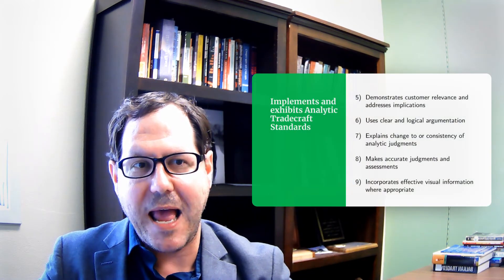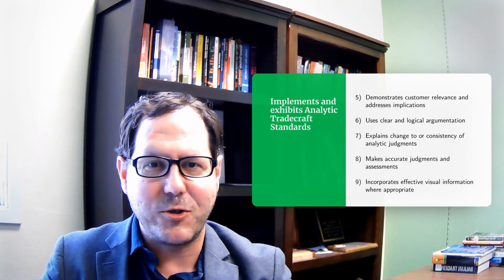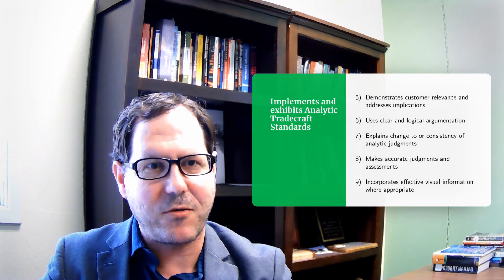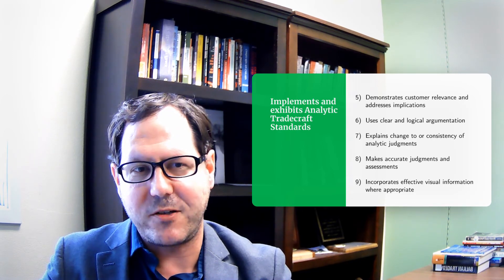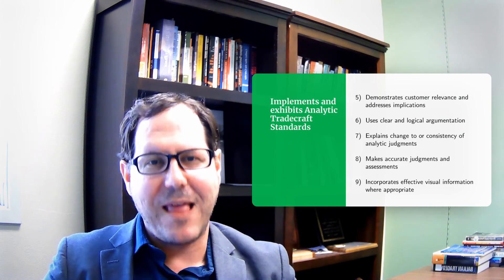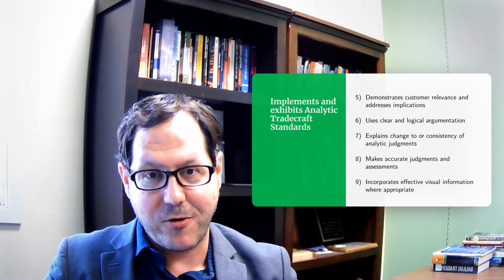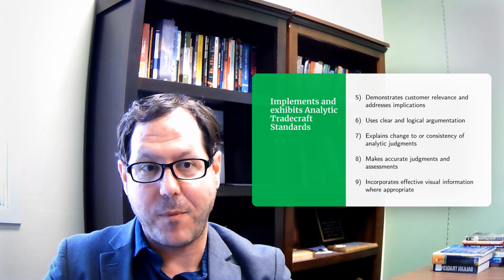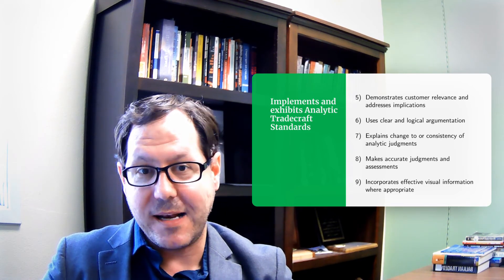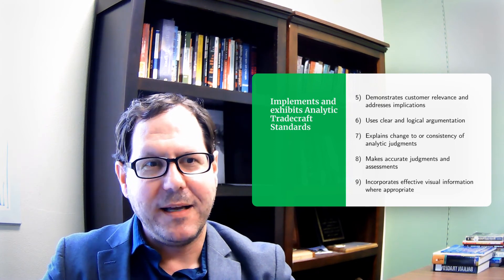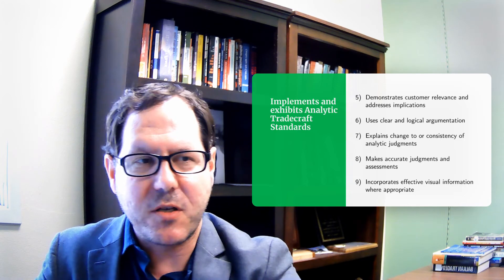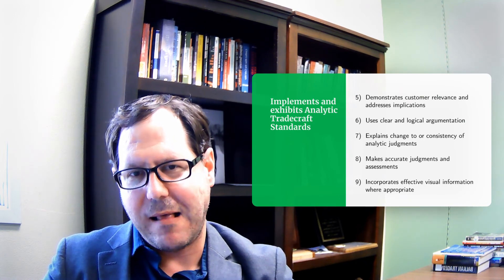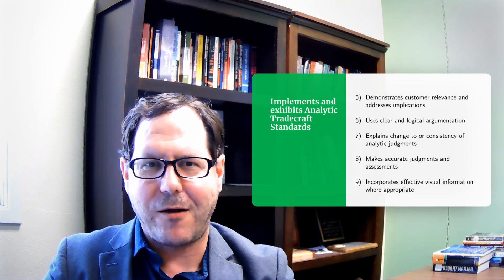Fifth, demonstrate customer relevance and address implications — information should be relevant to consumers since the purpose of drafting these products is that they'll be useful. Sixth, use clear and logical argumentation. Seventh, explain changes to or consistency of analytic judgments — as new information comes in, update your analysis and communicate that clearly to policymakers, whether something has changed or why old judgments continue to remain valid. Eighth, make accurate judgments and assessments. Ninth, incorporate effective visual information where appropriate. All of these pieces direct us on how we should be producing analysis and what it should look like — there's a lot more to unpack, and I'll tackle that in a subsequent video.